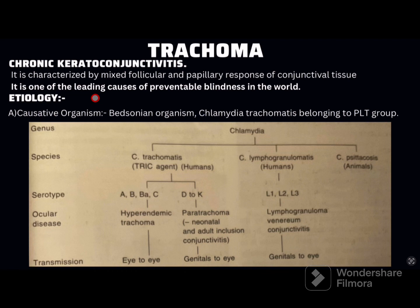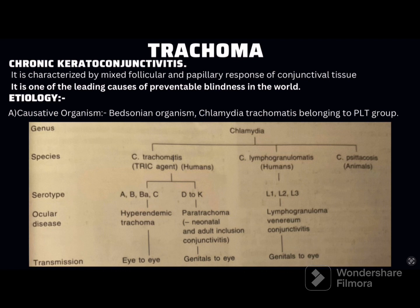In trachomatis, there are 11 serotypes. Serotypes A, B, Ba and C cause hyperendemic trachoma, where transmission is from eye to eye. Serotypes D to K cause paratrachoma, including neonatal and adult inclusion conjunctivitis, where transmission is from genitals to the eye. Lymphogranulomatis has three serotypes L1, L2, L3, causing lymphogranuloma venereum conjunctivitis. Chlamydia trachomatis is epitheliotropic and produces intracytoplasmic inclusion bodies called HP bodies.